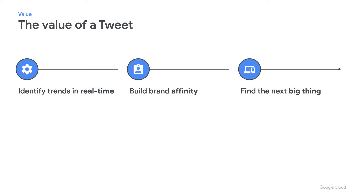Let's talk about how we start to translate that into business value. First, we can identify trends in real time because Twitter at its core is a real-time platform. Next, we can build brand affinity — working to interact with customers and our brands where they want to be met, talking to customers the way they want to be talked to, creating a virtuous cycle of engagement. And last, this helps us identify those moonshot opportunities for the big thing we can do next.